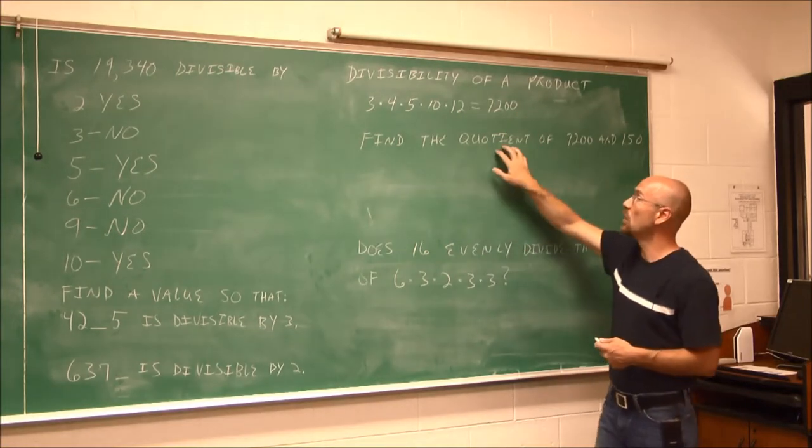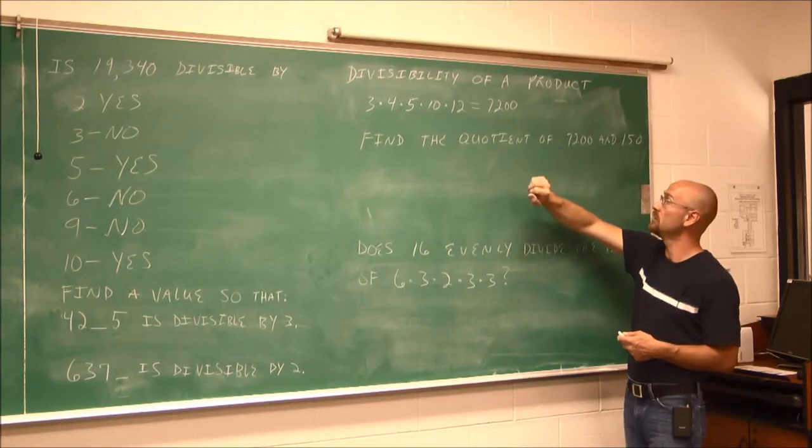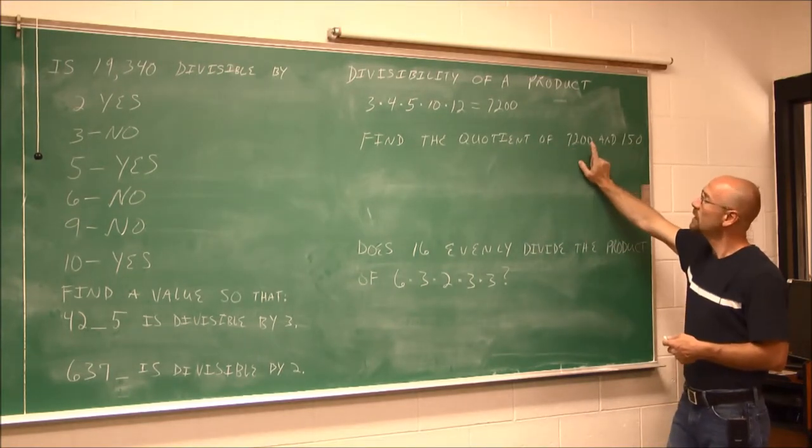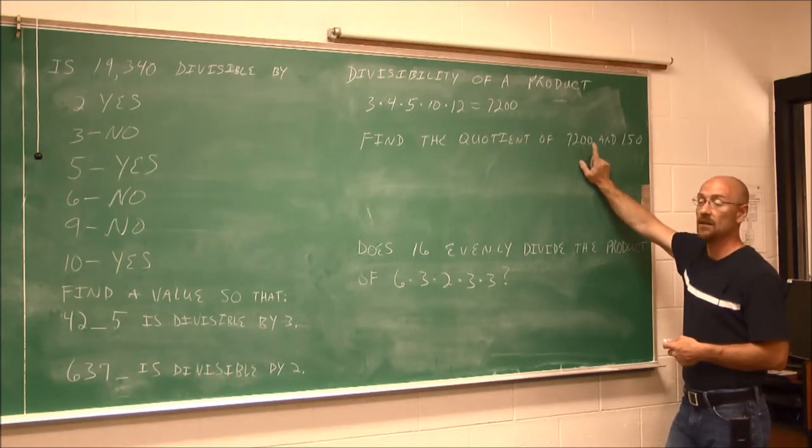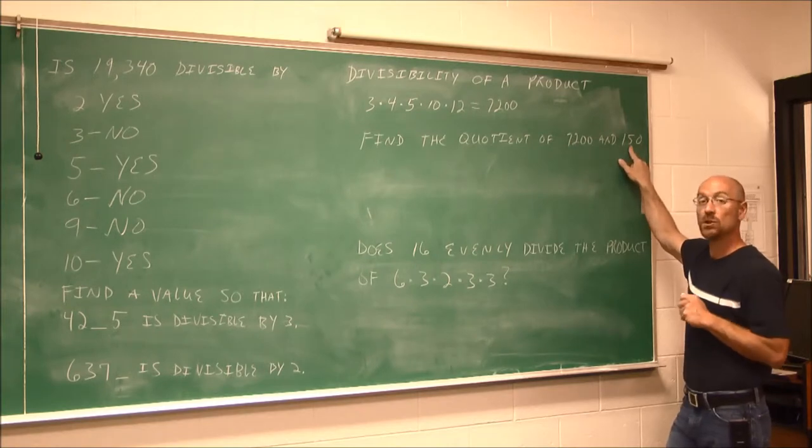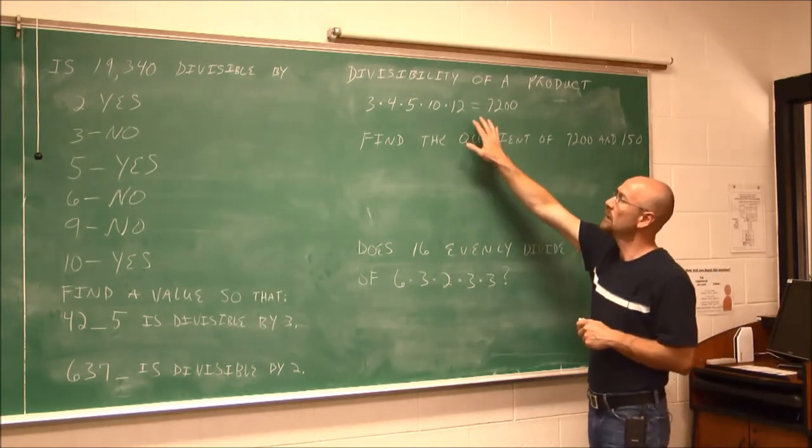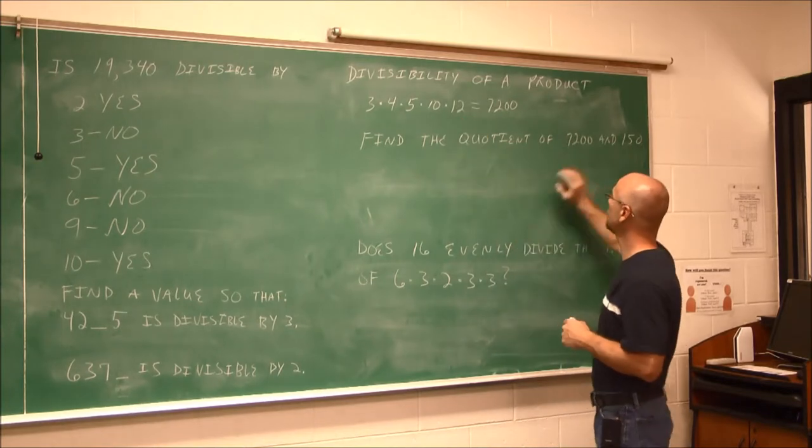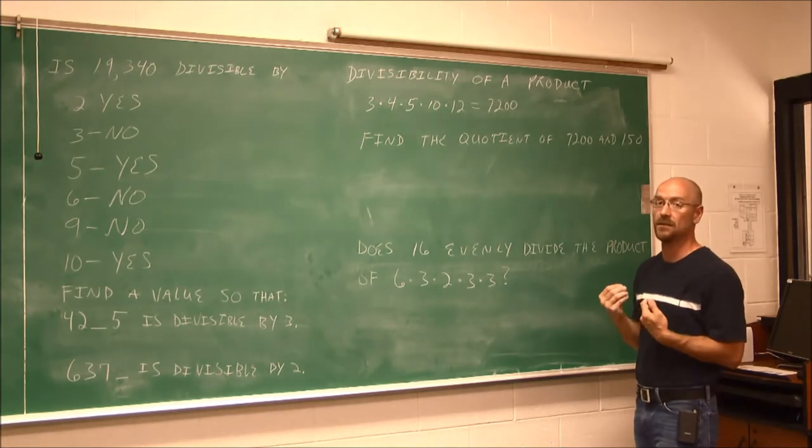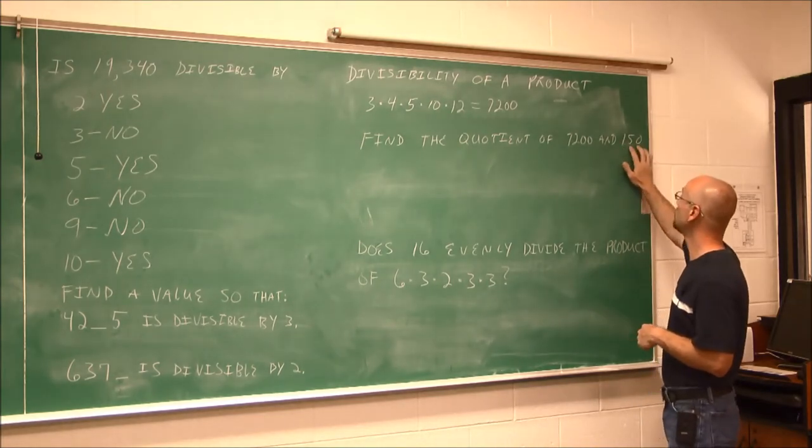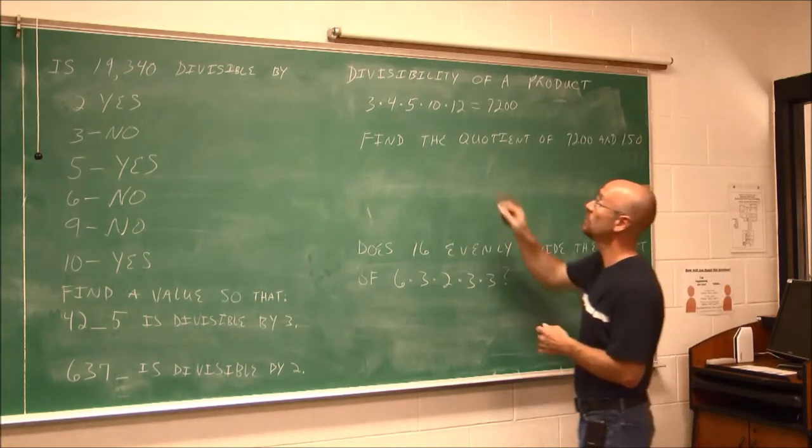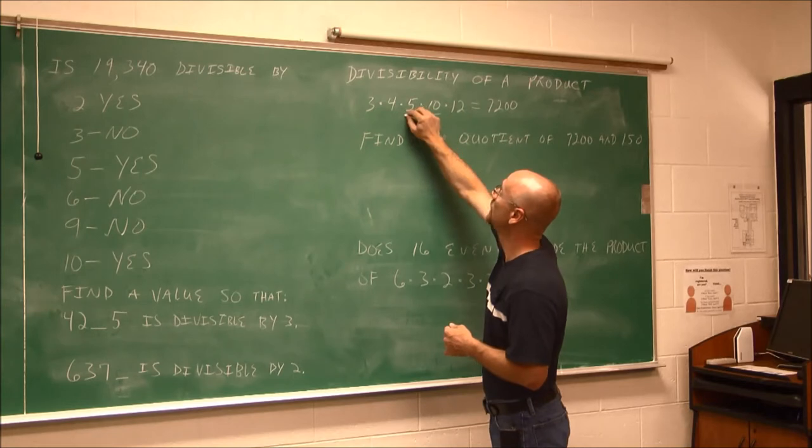It asks us to find the quotient, another term we need to be familiar with. It means division of 7,200 and 150. Essentially, it's saying find the value of this division, 7,200 divided by 150. Well, we can do a shortcut if we know our rules of division. Given this information, I can say, well, what's 150 divisible by? The smaller number is going to be the easiest thing to divide. And I can say, well, 150, it's divisible by 10, because it ends in 0 and 5. So it's divisible by 10 and 5.